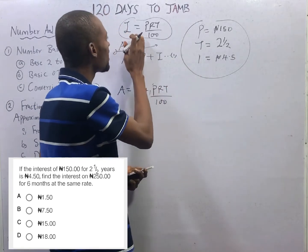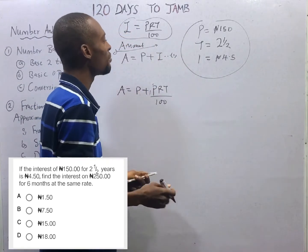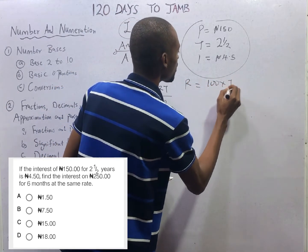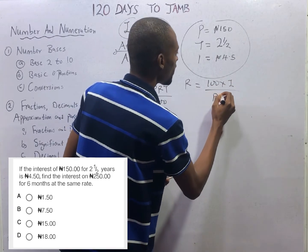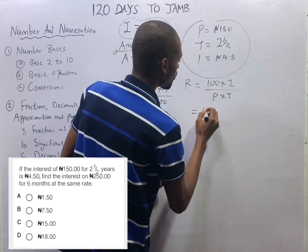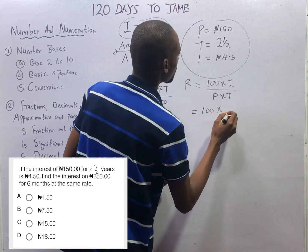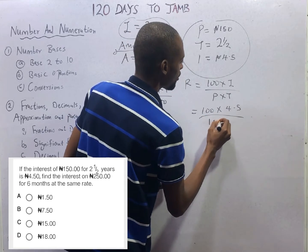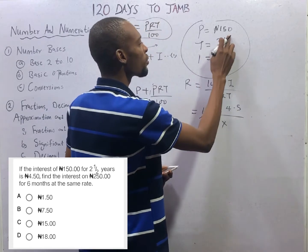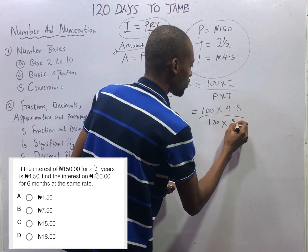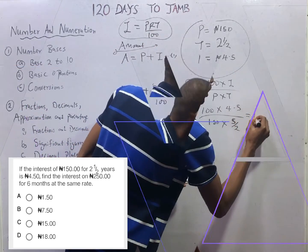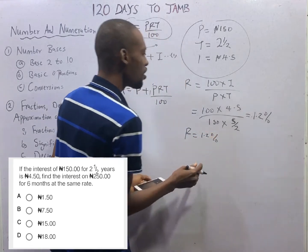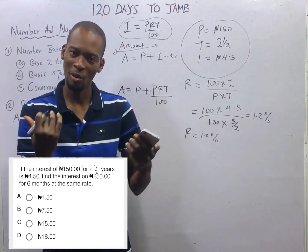From the first part: interest = principal × rate × time / 100, so rate = 100 × interest / (principal × time). That is 100 × 4.5 / (150 × 2.5), which equals 1.2%. So rate is 1.2%. From this rate we will be able to solve the second part.